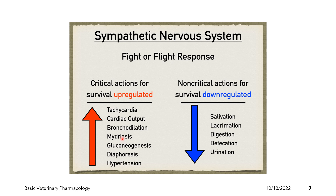There is also mydriasis — dilation of the pupil — because we need to see better to run away. Gluconeogenesis is the synthesis of new glucose from non-carbohydrate precursors; we need more glucose to provide energy to run away. Diaphoresis refers to excessive sweating, because there is an increase in body temperature brought about by increased ATP production. ATP induces an increase in the thermal rate of the body. Hypertension also occurs because the sympathetic nervous system initiates an increase in heart rate.